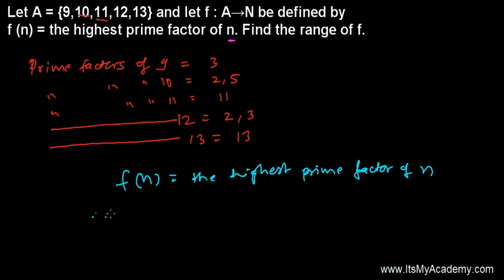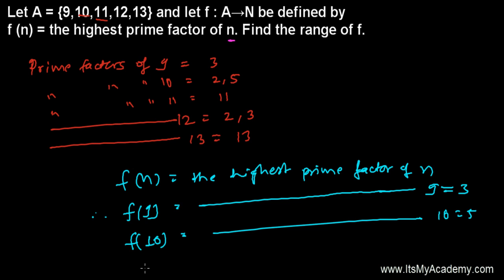Now the function is defined as f of n equals the highest prime factor of n. So for 9, if I'm inserting 9, I will get the highest prime factor of 9, that is 3. Similarly f of 10, the highest prime factor of 10 is 5. f of 11, the highest prime factor of 11 is 11 itself.